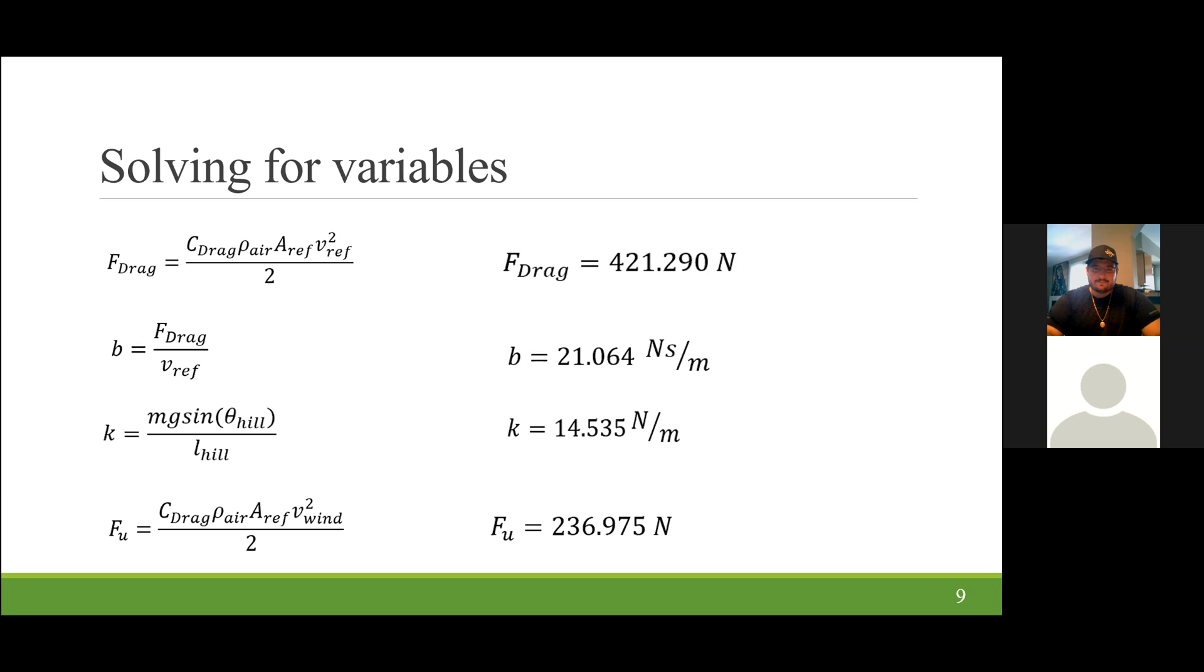Since we know our givens, we can solve for our variables that we will need throughout the problem. We will need to solve for the force of the drag on the vehicle. You gain this by multiplying the drag coefficient by the density of air by that reference area, which is normally the front of the vehicle, by the reference speed squared. This gave us a force of drag on the vehicle of 421.29 newtons. With our drag force, we can calculate our B, which will be the dampening effect that we have on the vehicle. This is F drag over our reference speed. This gives us a dampening coefficient of 21.064 newtons per meter.